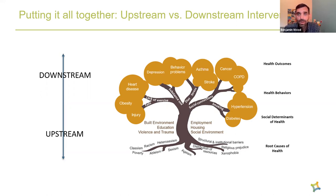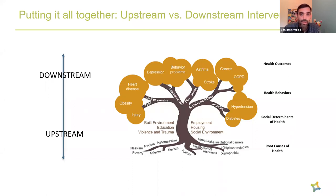The more downstream we're working, the more we're working at the health behavior level. The more upstream we're working, the more we're trying to address conditions in the trunk and work to address those root causes. There are lots of different ways to think about how to situate ourselves in doing upstream or downstream work. We're all trying to see positive change in our communities — the point is to focus more upstream so that we're creating conditions for more sustainable change, more choice and opportunity, and working to address unfair and unjust conditions in communities.